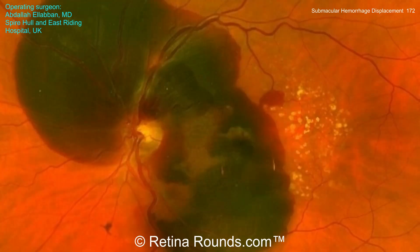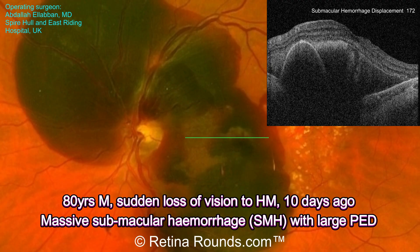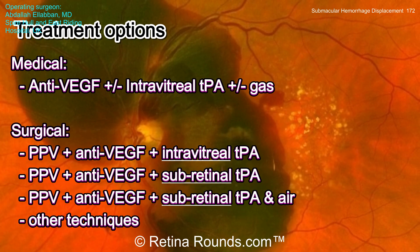Here's a fundus photo of our patient. You can see there's a large submacular hemorrhage in the left eye. This patient's vision is hand motions with onset of symptoms 10 days prior. You can see on the OCT there's a large pigment epithelial detachment, as well as an adjacent area of hyperreflective material in the subretinal space consistent with hemorrhage. Medical therapy includes intravitreal anti-VEGF injections alone, which would be reserved for patients with only mild submacular hemorrhage.